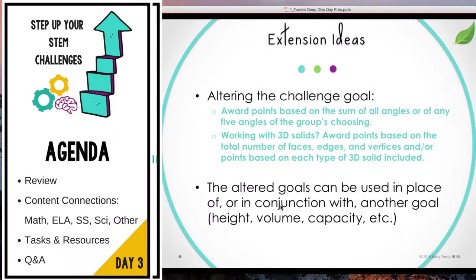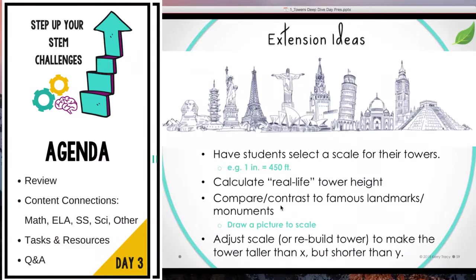The altered goals can be used in place of or in conjunction with another goal — you don't have to just keep it to height, volume, or capacity. You could have height plus edges, faces, and vertices. Here's an idea I love for upper grades: working on scale and proportion. Have students select a scale for their towers — they can make it up, like one inch equals 450 feet — then calculate how tall that would make their tower in real life, compare it to famous landmarks or monuments, draw a picture to scale, and then challenge them to adjust their scale or rebuild their tower to be taller than one landmark but shorter than another.